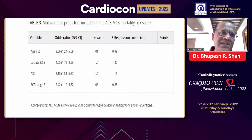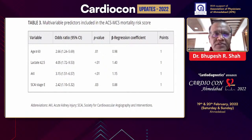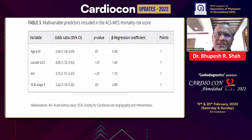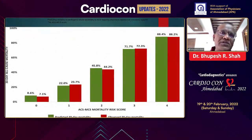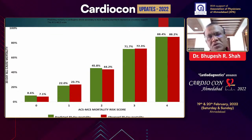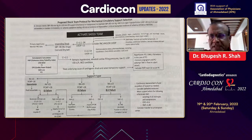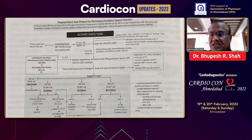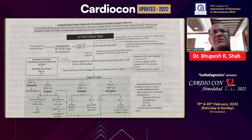Looking at the ACS-MCS mortality risk score: age more than 60 gives one point, lactate more than 2.5 one point, kidney injury one point, stage E one point. This patient is young, so only lactate applies — one point, corresponding to observed mortality around 20 to 25 percent. We also need to know whether the patient has right-sided heart failure, as right ventricular dysfunction carries high mortality.